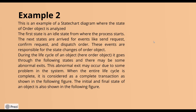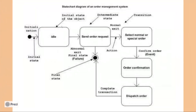In the order management system diagram: you start in the initialization state, then move to the idle state where the system waits. You then request an order. If the order cannot be processed — due to closing time or unavailable riders — you receive a failure message and reach the end state (abnormal exit). If normal, you select the order, they confirm it, and then dispatch it, finally reaching the end state (normal exit).